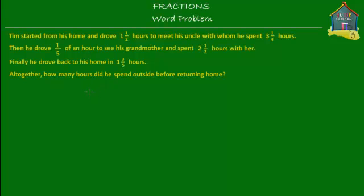Welcome to homecampus.com.sg. Here is a word problem for you. Tim started from his home and drove one and a half hours to meet his uncle, with whom he spent three and a quarter hours. Then he drove a fifth of an hour to see his grandmother and spent two and a half hours with her. Finally, he drove back home in one and three-fifth hours. Altogether, how many hours did he spend outside before returning home?